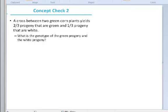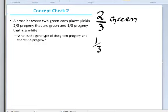Now looking at Concept Check 2, we see here that a cross between two corn plants yield two-thirds progeny. They're green. One-third is white. The question is, what is the genotype of the green progeny and the white progeny? Let's say most of them are green, so let's assume that this is your dominant allele. And this is your recessive allele.